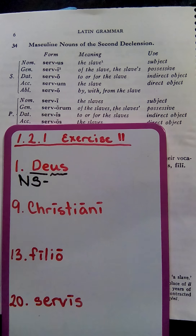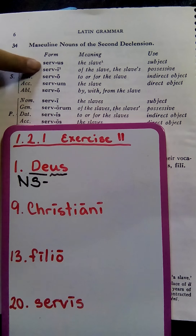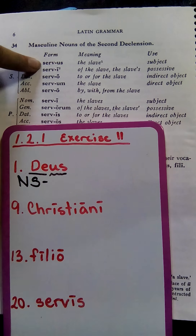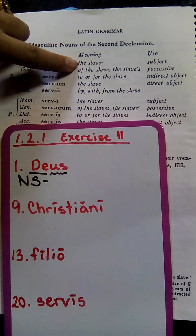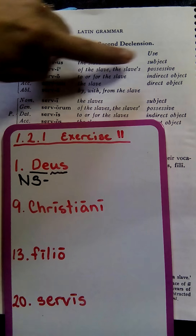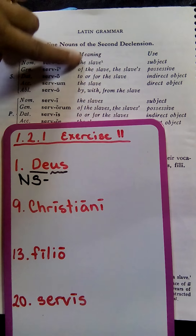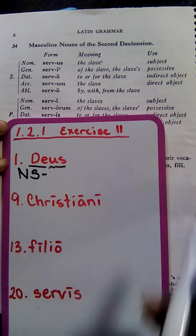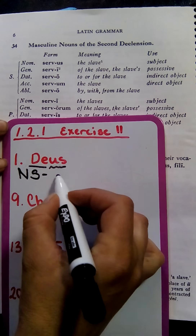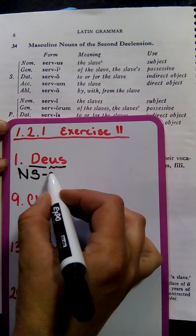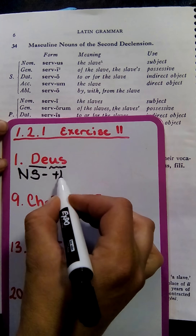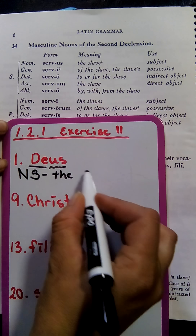We see that "us" only shows up one time — that is the nominative singular. So we're going to write nominative singular. That is the form that "deus" is in. Now we're going to look at what the meaning is, using the example of "servus."